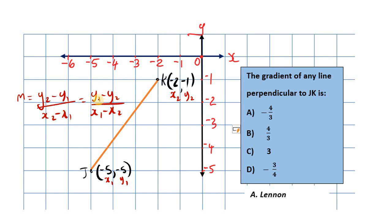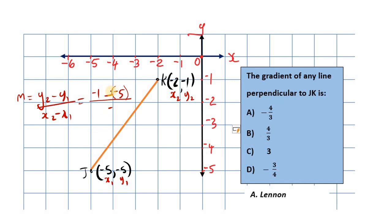Using the first formula, the second y-coordinate is negative 1, minus the first y-coordinate which is negative 5 — we can put this in brackets to separate the minus from the negative. For the denominator, x2 minus x1: x2 is negative 2, subtract x1 which is negative 5, again using brackets. It's good practice to use brackets there.